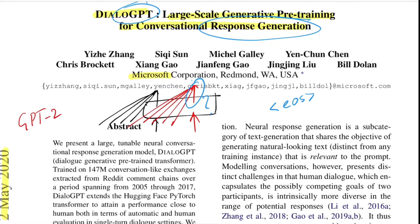OpenAI released many versions of this model depending on the number of layers and parameters. The researchers in this paper use many of these variations during the pre-training step. We'll get to the results of each as we proceed forward. That was a high-level view of what GPT is.